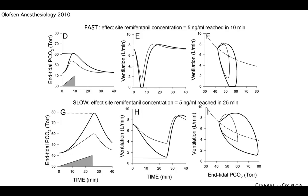Why is that? Imagine this: because you injected it so quickly, there is a high concentration in plasma. There is rapid crossing of the opioid into the brain compartment, and it silences the respiratory neurons in the brainstem way before there is sufficient increase of CO2 to sustain breathing.